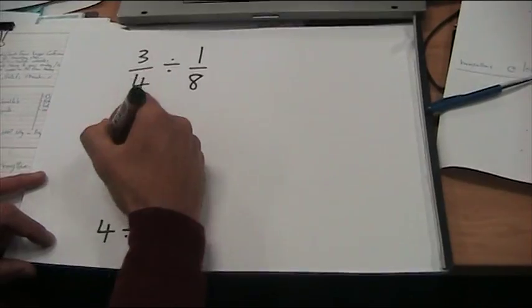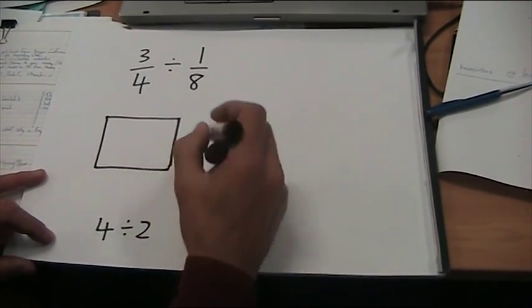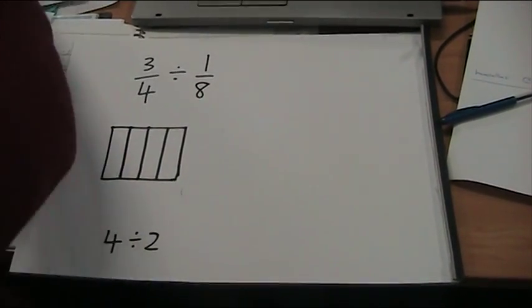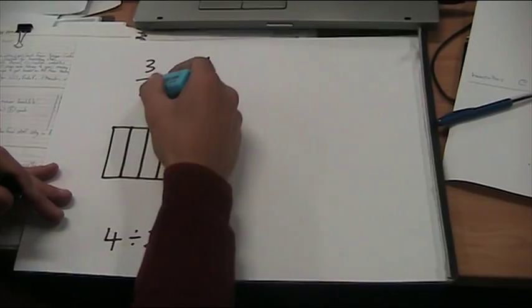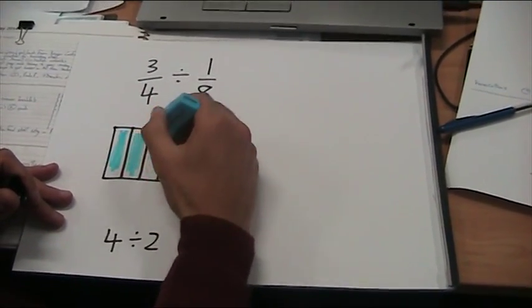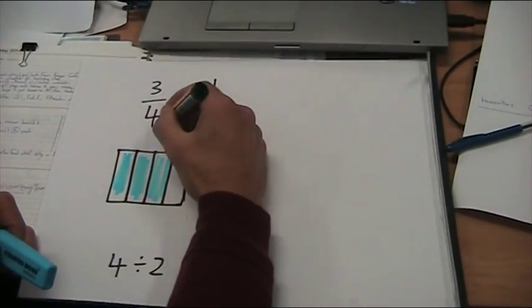If I just draw 3 quarters, let's take a box and split it up into 4 parts. Split up into quarters, and now I'm going to color 3 quarters. Okay, so that's that.